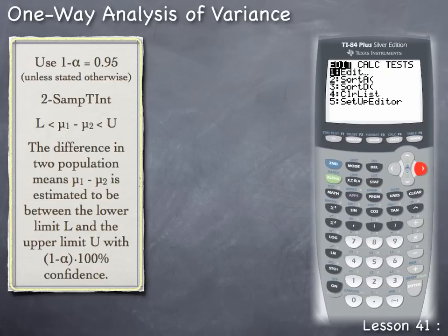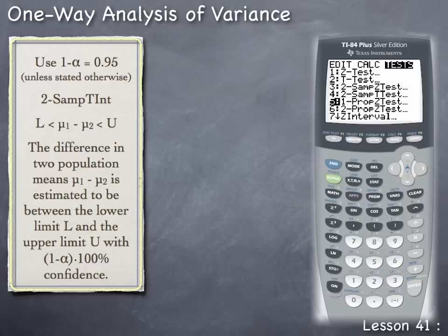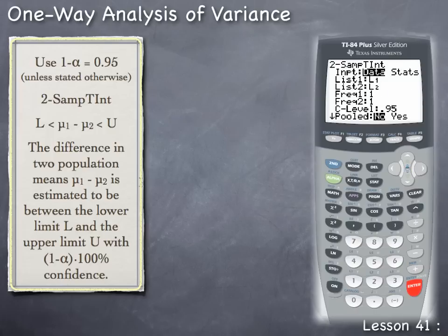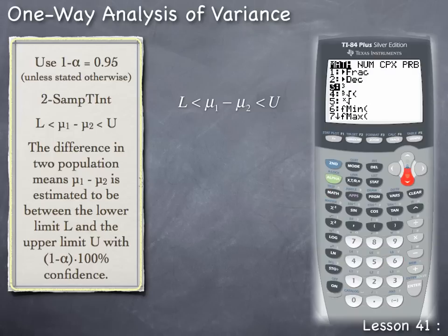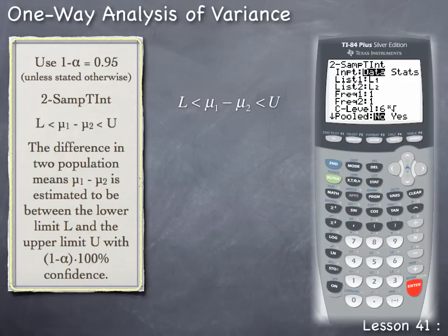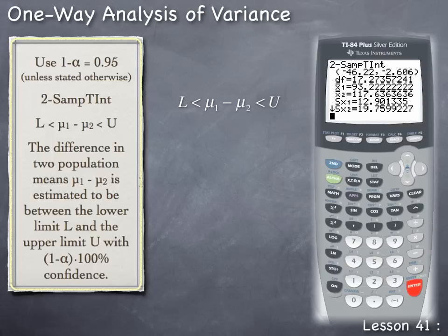To do this on the TI-84, press STAT, arrow over to TESTS, and arrow down to the 2-SampTInt command, then press ENTER. To compare the first and second population means, use the data in List 1 and List 2. To achieve an overall 95% simultaneous confidence level for all six intervals, each individual interval must use the sixth root of 0.95 as the confidence level. Press 6, then MATH, arrow down to the x-root command, press ENTER, then enter 0.95. This calculates the sixth root of 0.95 — approximately 0.99148. Set Pooled to No, arrow down to Calculate, and press ENTER to get the estimate for μ₁ − μ₂.